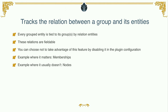Examples where the relation matters: members. Examples where it usually doesn't matter: nodes — although there are use cases. One use case would be a book club where the admin adds book nodes to the group and has a field on the relation saying 'why do I want to add this book to my group?' So the relation does sometimes make sense.